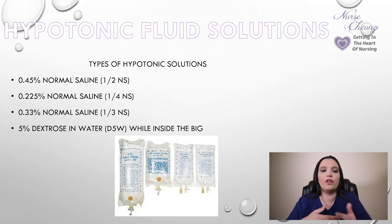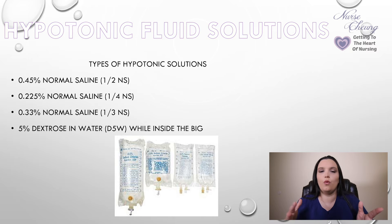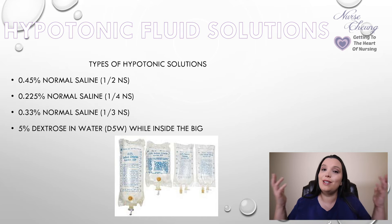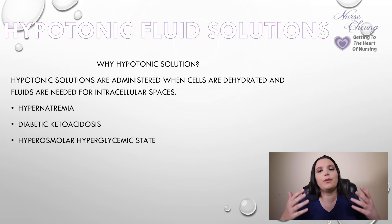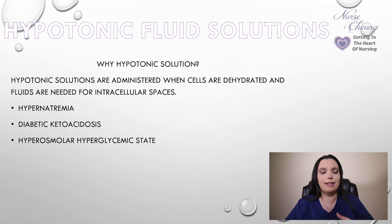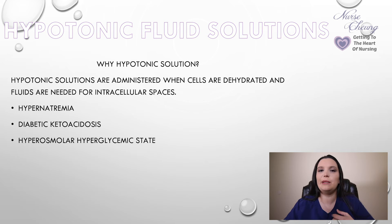Examples of hypotonic solutions — you're always looking for the fractioned solutions: half normal saline, one-fourth normal saline, one-third normal saline. And D5W appears here again, because once it enters the body it behaves as a hypotonic solution. We give hypotonic solutions for patients whose cells are dehydrated and fluids are needed in the extracellular spaces — such as hypernatremia (too much sodium in the bloodstream), diabetic ketoacidosis, and hyperosmolar hyperglycemic states.